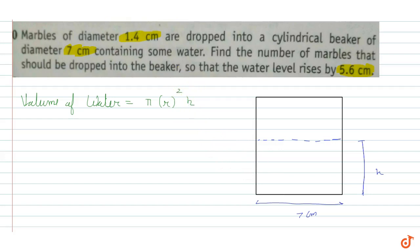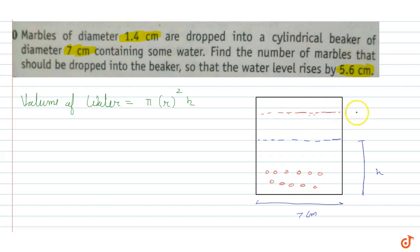Now we are continuously dropping marbles into the cylindrical beaker, so there are some marbles in it. As a result, the water level rises by 5.6 cm. We can clearly understand the increase in the water level is due to the marbles, so the change in volume of water is equal to the volume of marbles.